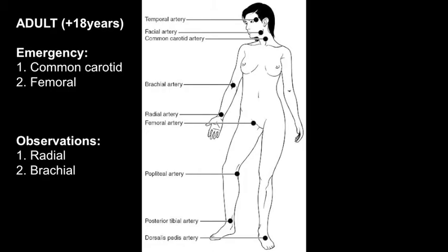This picture shows the nine most common sites to palpate a pulse in an adult. A pulse can be found wherever an artery passes close to the skin and over a firm or bony surface of the body. In an emergency, the common carotid or femoral pulse would be first choice, as the pulse will be strongest in these larger arteries and are closer to the heart. For basic observations such as pulse rate and blood pressure, the radial pulse and brachial pulse would be used for their ease of access.